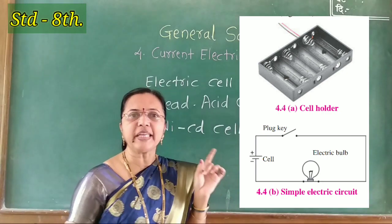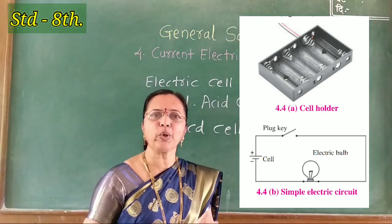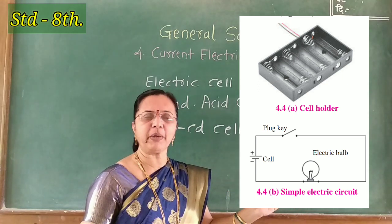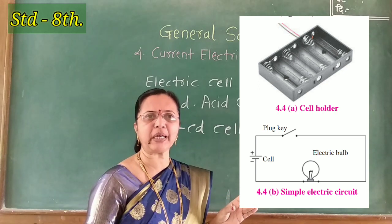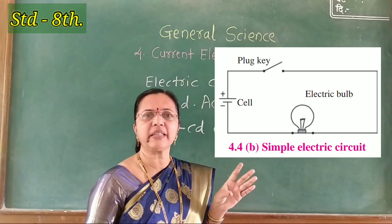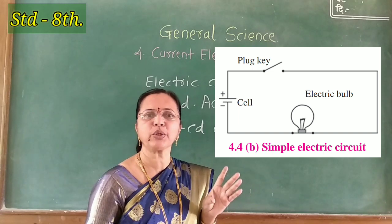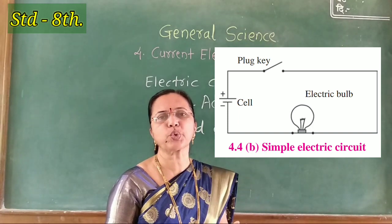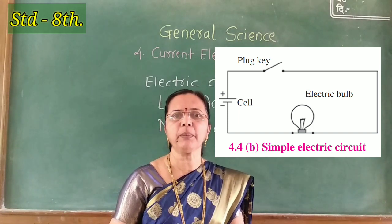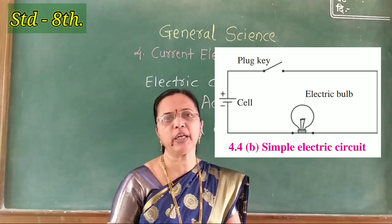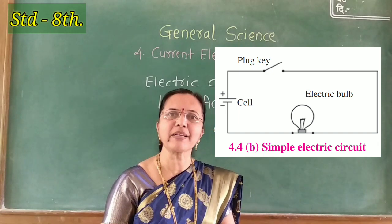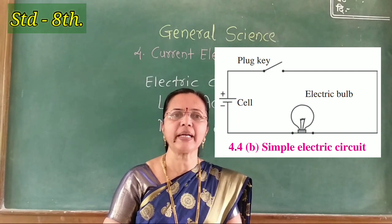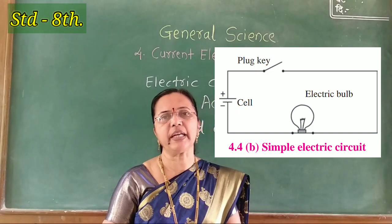This means that a current flows through the circuit and the bulb lights up. On the removal of the cell, the electric current flowing through the circuit stops, as indicated by the bulb which ceases to glow. This type of connection of electrical components is called an electric circuit.